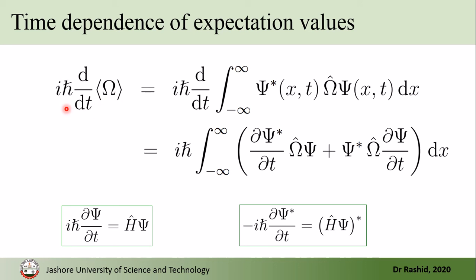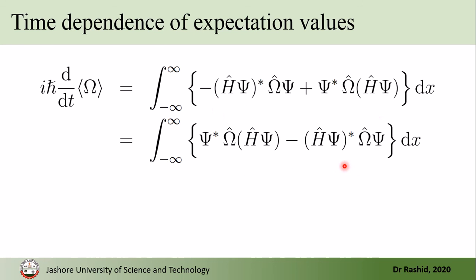I multiply i-h-bar on both sides of this equation. Using these two equations, I get from this one the following. In the second line, I just change the order of these two terms. We see here that H-hat is operating on psi and its complex conjugate is multiplied with a function — because when an operator acts on a function, the result is also a function. For example, if we have x-squared plus 2 and take the derivative, that is 2x, which is also a function.